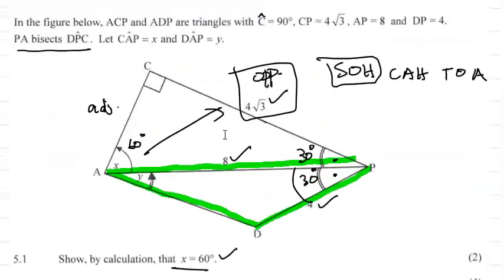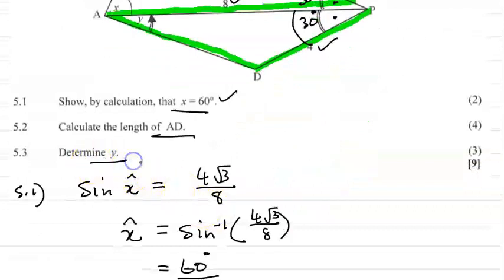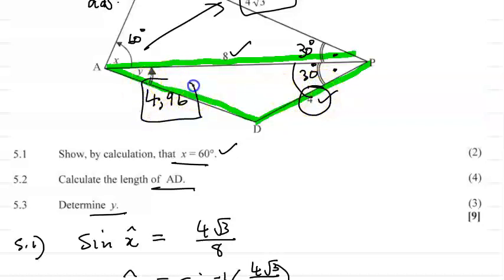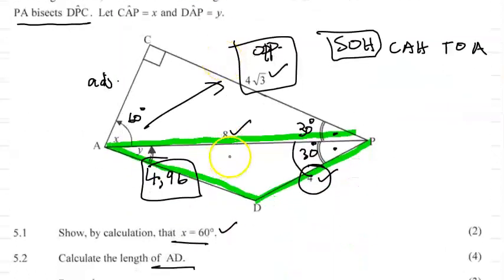Now for 5.3, determine y. Update the diagram: AD is 4.96 units. Angle y is in triangle APD. We have DP = 4, AD = 4.96, and angle APD = 30 degrees. Since this is a non-right angle triangle and I want to find angle y, I have its opposite side (AD = 4.96) and another side (DP = 4) with its opposite angle (30°) — a perfect case for the sine rule.